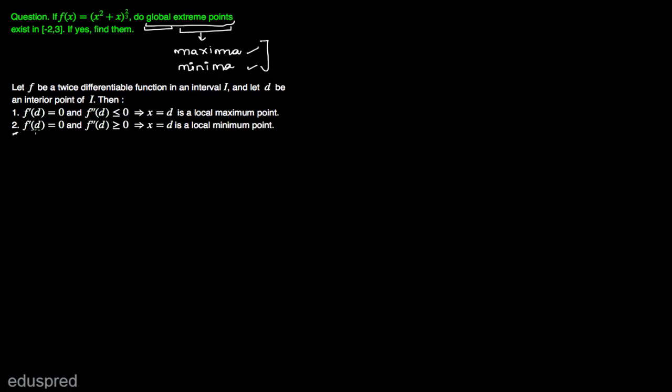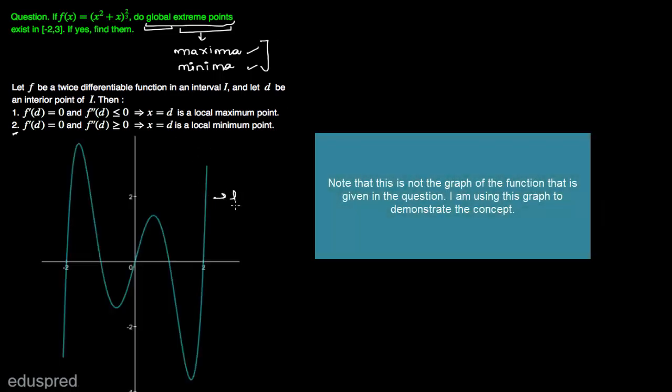Secondly, if f'(d) = 0 and f''(d) ≥ 0, this implies that x = d is a local minimum point. That is, if the first derivative evaluated at point d equals 0 and the second derivative when evaluated at point d is greater than or equal to 0, then we say that d is a local minimum point.